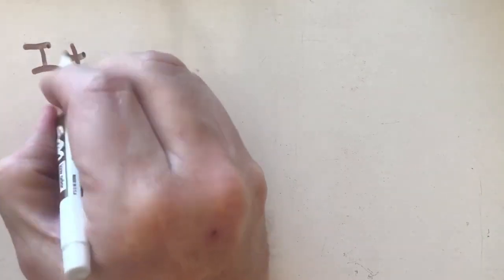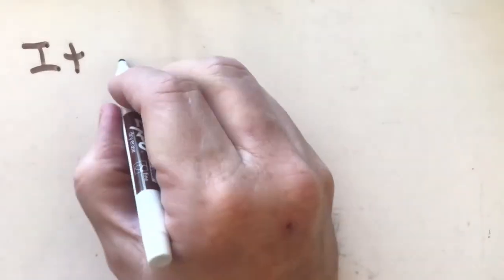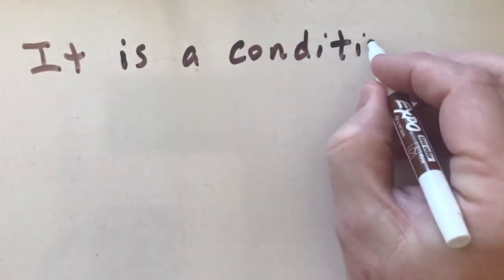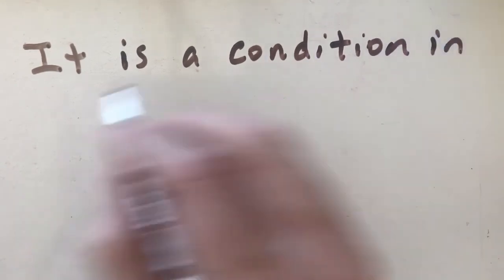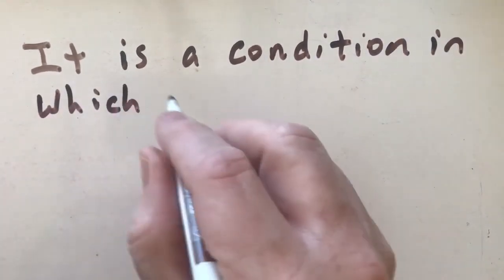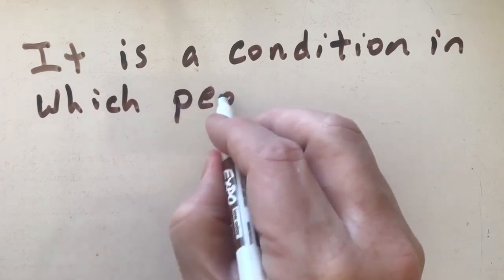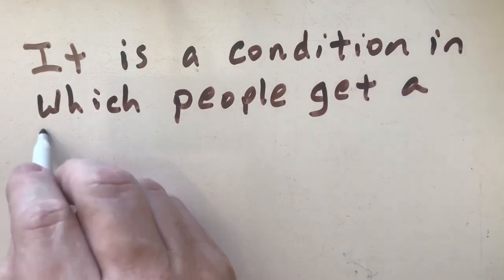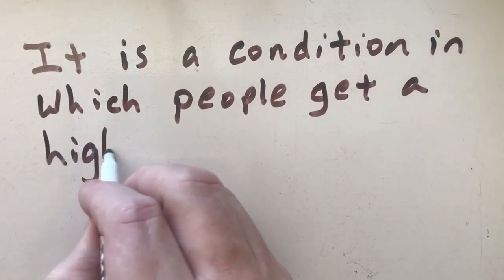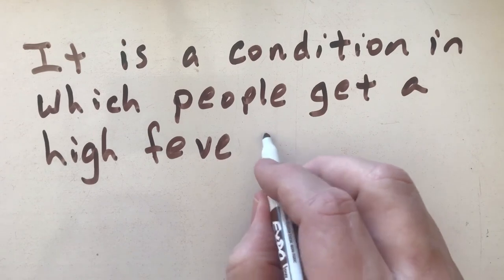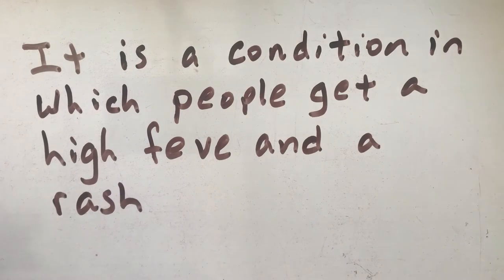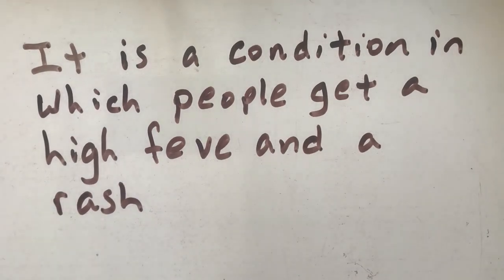Roseola is a condition spread by the respiratory route in which people get a high fever and a rash.